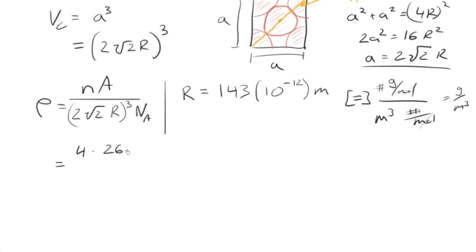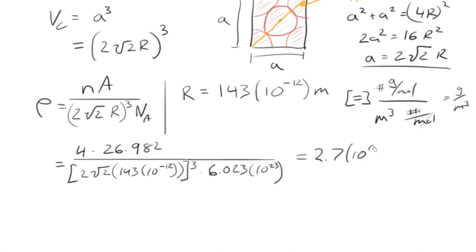So, for 26.982, that was our molar mass for aluminum. And then, we have down here, 2 root 2 and then 143 times 10 to the minus 12. And that whole thing is cubed times 6.023 times 10 to the 23rd. That's how I like to do it. I write it all out carefully like that and then do the calculation, which you'll see is 2.7 times 10 to the 6.